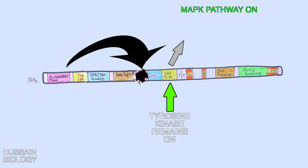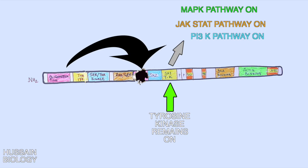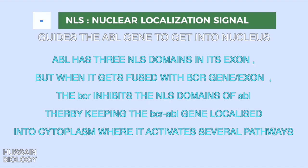Not only is the MAPK pathway turned on, but the JAK-STAT pathway is also activated. BCR-ABL targets the STAT5 protein; tyrosine phosphorylation of STAT5 activates it, leading to its translocation to the nucleus and subsequent binding to STAT5 binding sites on DNA. Many other pathways, such as PI3K, are also activated through crosstalk. Furthermore, although the BCR-ABL gene has three nuclear localization signal (NLS) domains, it predominantly locates in the cytoplasm because the BCR domains inhibit the NLS signal of ABL, blocking nuclear transport. This keeps BCR-ABL in the cytoplasm, where it activates the JAK, PI3K, and MAPK pathways.